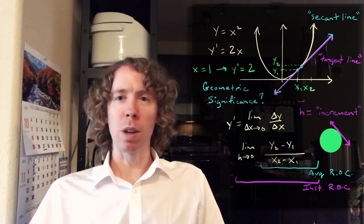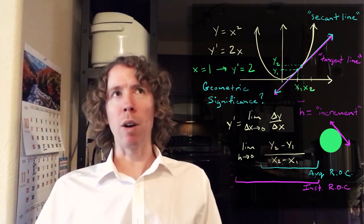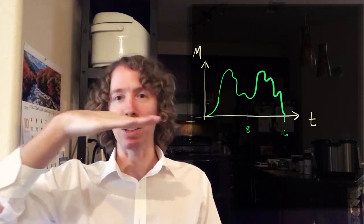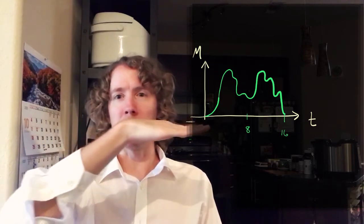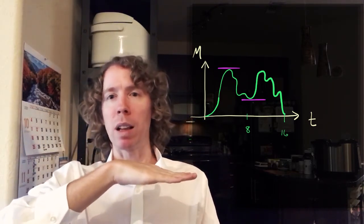So one thing that we can use that for is for example, to find out where our function has peaks and valleys, because if you think of a tangent line, like at a peak, a tangent line will be flat or at a valley, a tangent line will be flat. The slope of a flat line is zero.